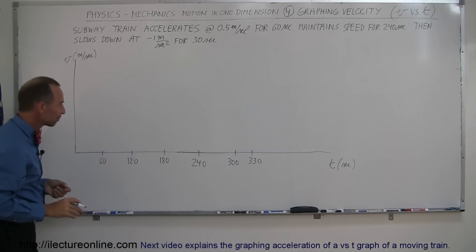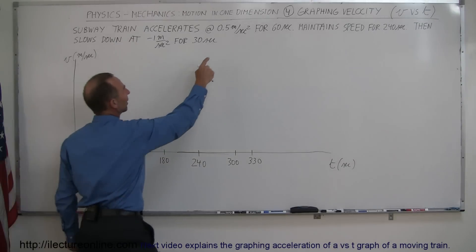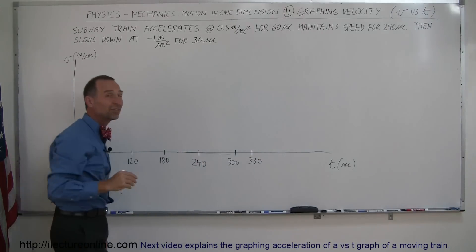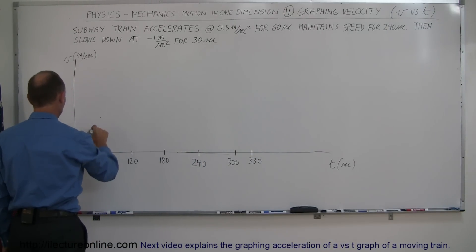And so here's my graph, starting out at rest, so velocity is 0, then accelerates. And of course it accelerates at 0.5 meters per second squared for 60 seconds. That means it reaches a speed of 30 meters per second. So in the first 60 seconds, the speed goes from 0 to 30 meters per second.